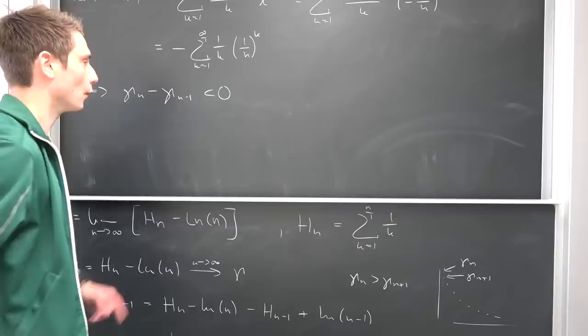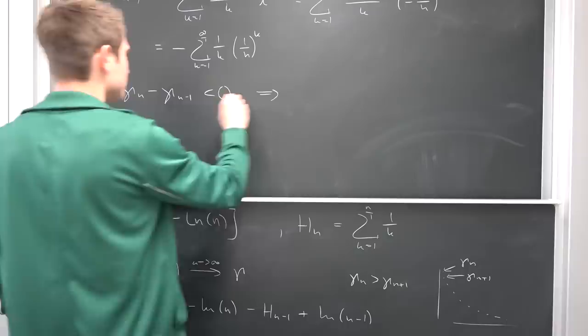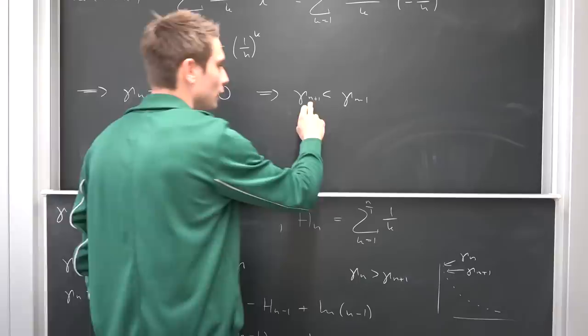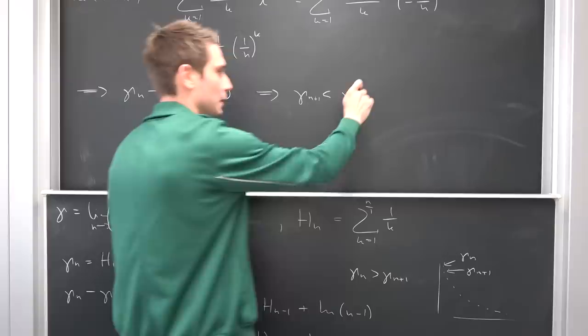Adding γ_{n−1} to both sides gives γ_n < γ_{n−1}. If you plug n+1 in place of n, that's exactly what we wanted to show. So we have shown that our sequence is monotonically decreasing.